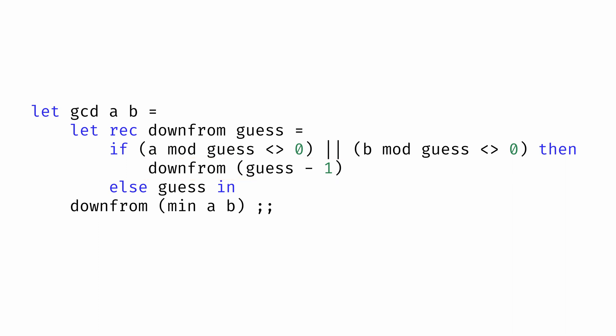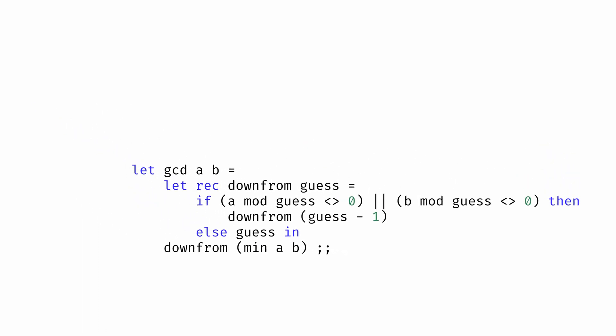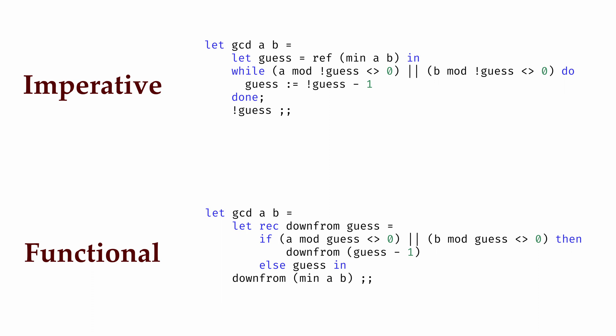A few things might stand out to you here. First, though the code is different, it's fundamentally the same algorithm. We keep making smaller guesses until we find a guess that works. But this time, there's no loops, like a for loop or while loop, and there's no changing the state of the computation as by updating variables. Instead, it's just functions calling functions.